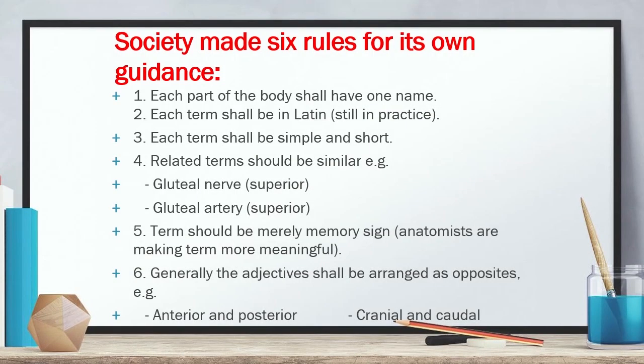The society made six rules for its own guidance. First, each part of the body shall have one name. Second, each term shall be in Latin, which is still in practice. Third, each term shall be simple and short. Fourth, related terms should be similar — for example, gluteal nerve superior, gluteal artery superior.